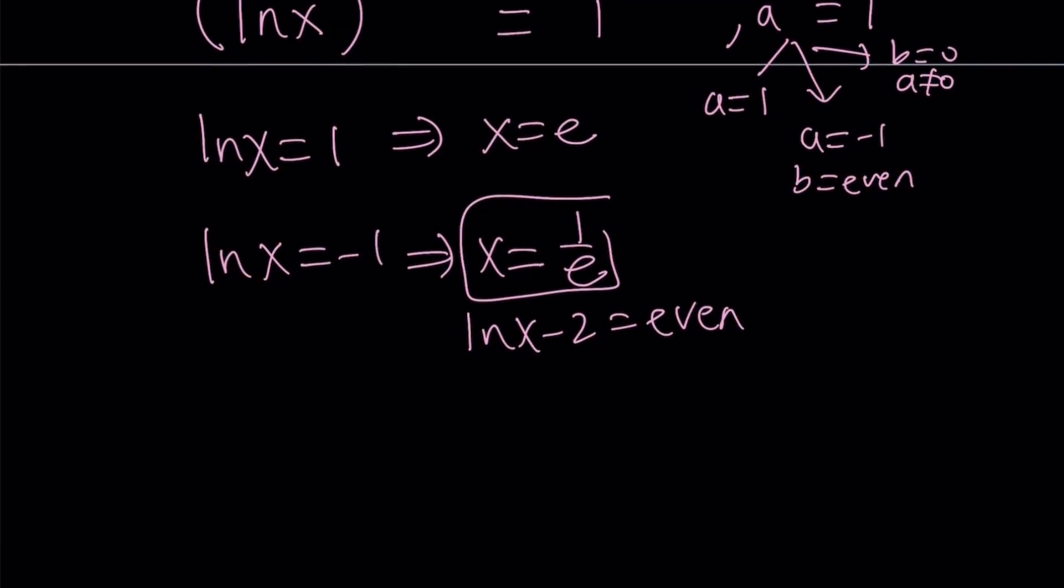Well, if ln x is negative one, then this is negative one minus two. But unfortunately, negative one minus two is negative three, and that is not even. So this doesn't work. We're not going to take x equals one over e. We're going to reject it, and then look at the third one.